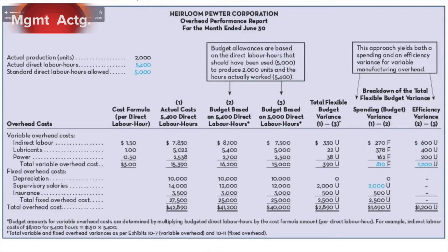Under the first column, the cost formula per direct labor hour, we have our variable overhead cost components: indirect labor, lubricants, and power. Our total variable overhead cost is $3 per direct labor hour. These are costs that should vary by this much per every direct labor hour. The first column represents our actual costs incurred for the month based on 5,400 direct labor hours actually incurred.